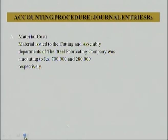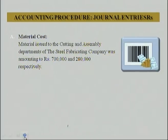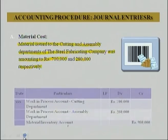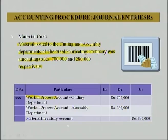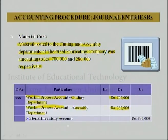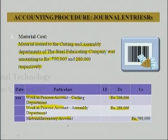Now we will look at the accounting procedure and journal entries in the process costing system. For example, material issued to the cutting and assembly departments of the steel fabricating company amounted to Rs. 700,000 and Rs. 280,000 respectively. The journal entry is: debit work-in-process cutting department Rs. 700,000, debit work-in-process assembly department Rs. 280,000, and credit material inventory account Rs. 980,000.